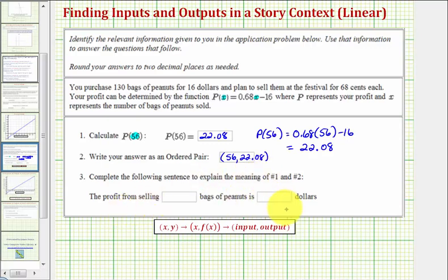Number three, we want to complete this sentence. The profit from selling blank bags of peanuts is blank dollars. And as we already said earlier, the input x is the number of bags of peanuts. So the profit from selling 56 bags of peanuts is the function value, p(56), which is 22 dollars and eight cents.